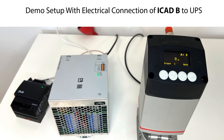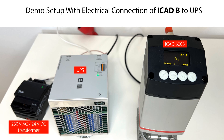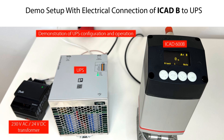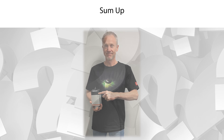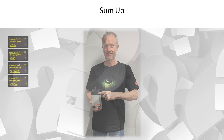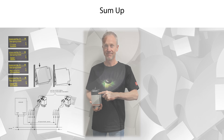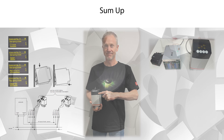Here you see a demo setup with an electrical connection of the ICAD-B to the UPS. This setup is similar to the earlier shown wiring with one common 24-volt DC transformer for both the ICAD-B and the UPS. We use this demo setup in the video to demonstrate how to configure and operate the UPS in the ICAD-B. You have now shortly seen the features and benefits of the Danfoss UPS, and how to mechanically mount the UPS and electrically connect it to the ICAD-B. This will efficiently support you in doing a fast and easy installation and save your time and cost.